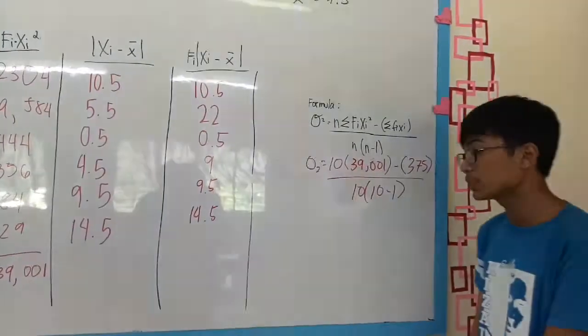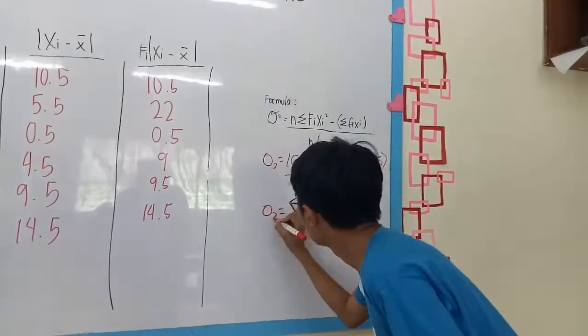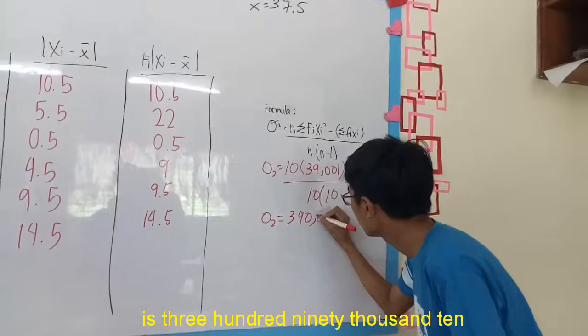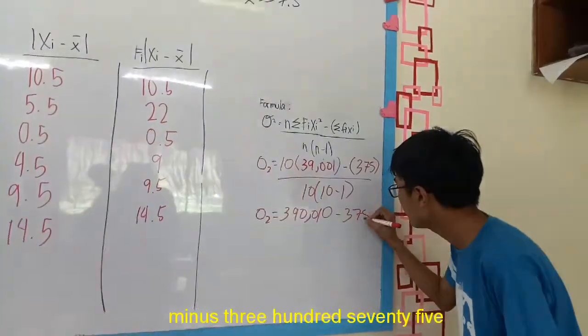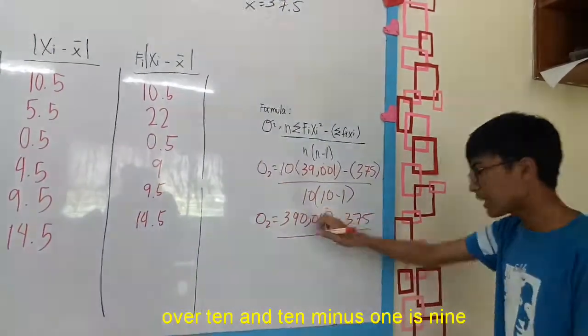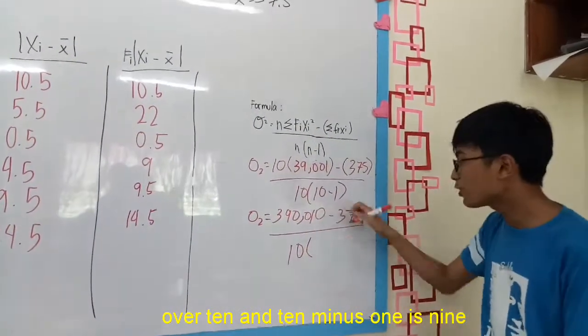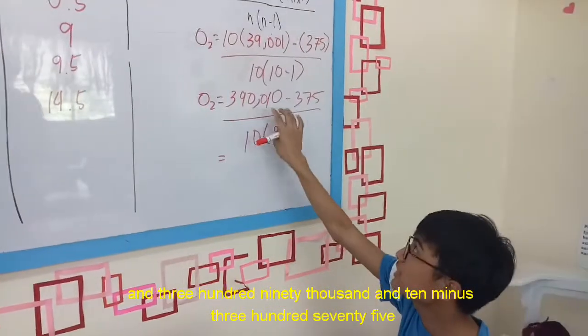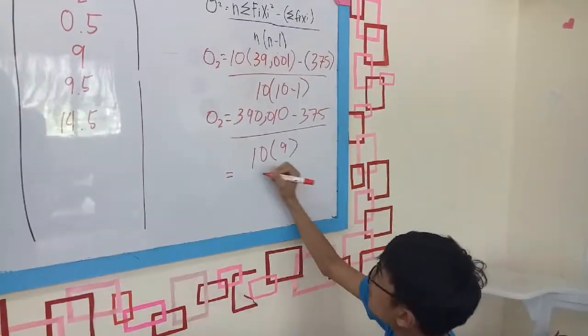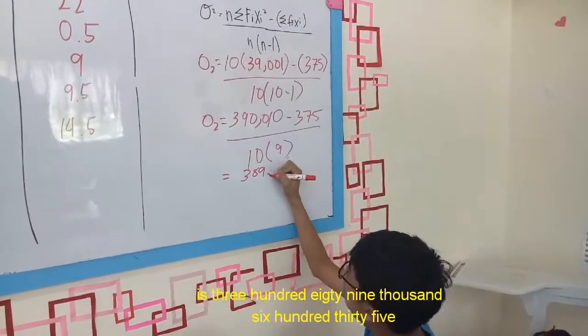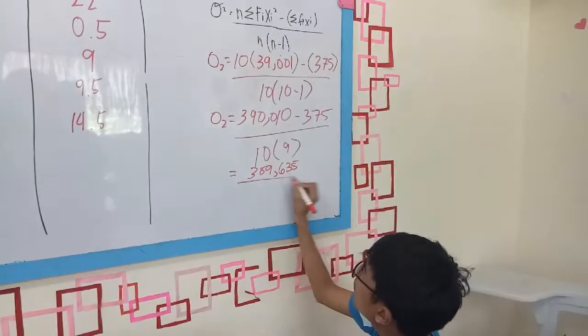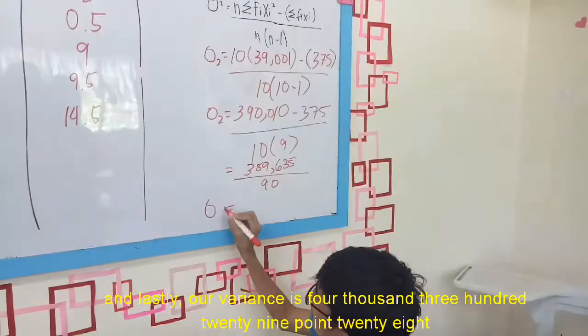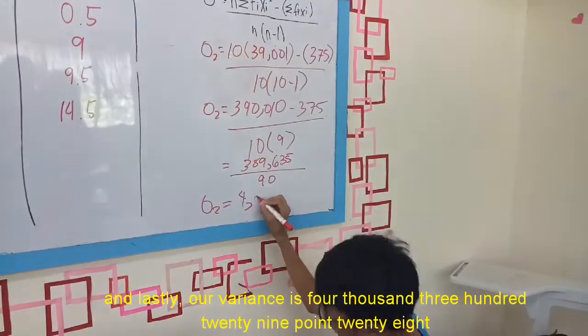Then we multiply 10 times 39,001 is 390,010. Then minus 375 squared. 375 squared is 140,625. Then 390,010 minus 140,625 over 10 times 9 is 90. So 389,635 over 90. And lastly, our variance is 4,329.